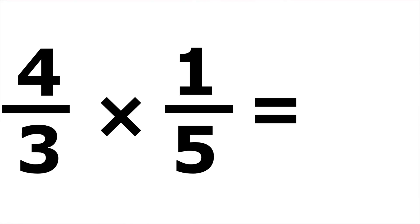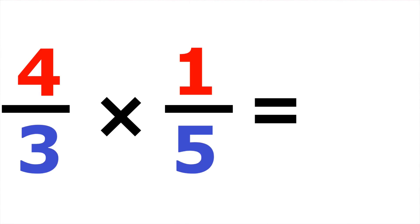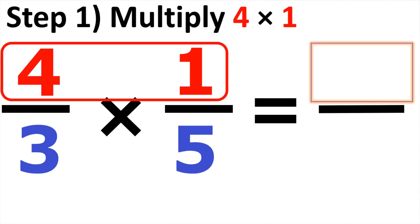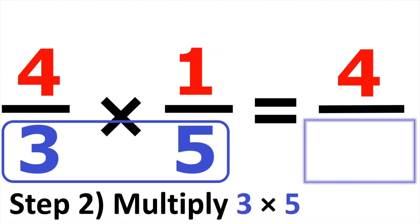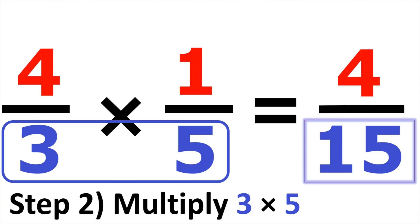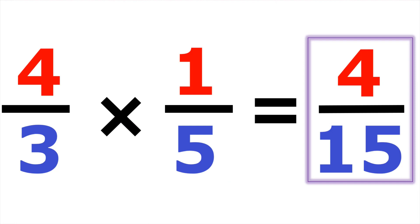Example number seven, we have four over three times one over five. Multiplying straight across using the numerators, we have four times one, which gives us four. At the bottom, our denominators are three and five, so three times five is fifteen. Our answer is four over fifteen.